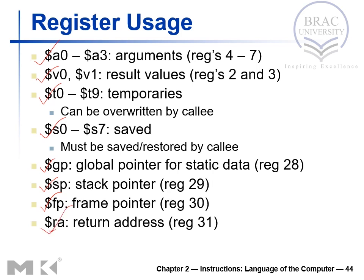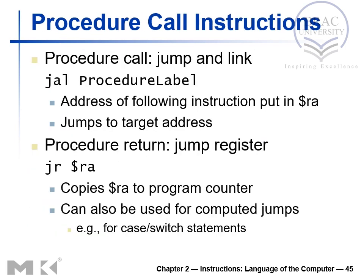In this slide we'll see how we can support procedure calls in MIPS. Apart from the procedure call, we have instructions: JAL and JR. JAL is a J-type instruction and JR is an R-type instruction. The purpose of the JAL instruction is that the address of the following instruction is put in the RA register. RA register is register number 31, used for storing the return address. JAL then jumps to the target address, that is, to the subroutine.